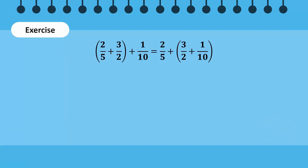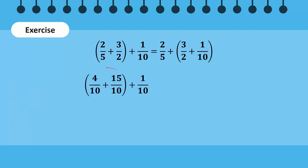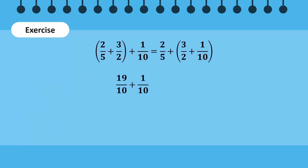We will first solve the left-hand side of the equation. Since the denominators are not equal, an LCM of 5 and 2 is taken. Next, the numerators of these two numbers are added to give the answer 19 over 10.